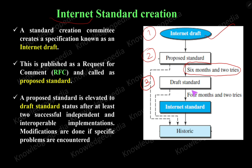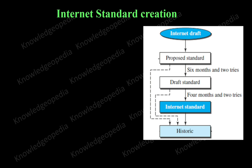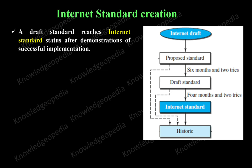Again, within a four-month period, two or more groups of people will work on the draft standard to check if there is any loophole or if it can move to the final standard stage. The draft standard reaches internet standard status after successful implementation is demonstrated. The fourth stage is the internet standard.